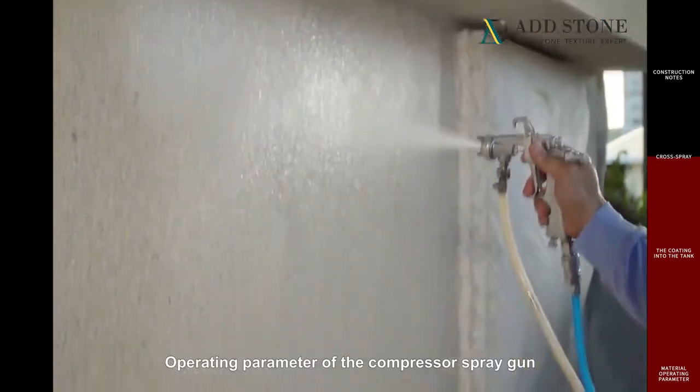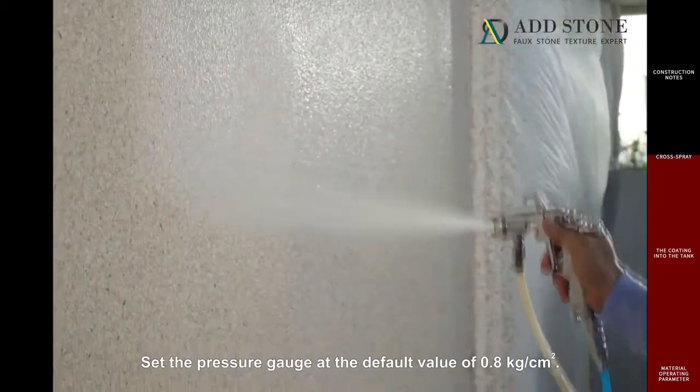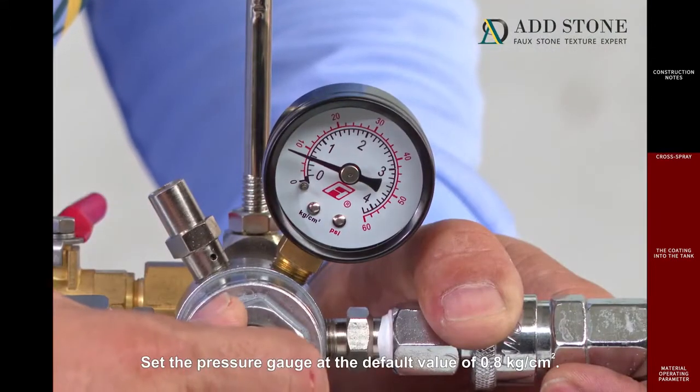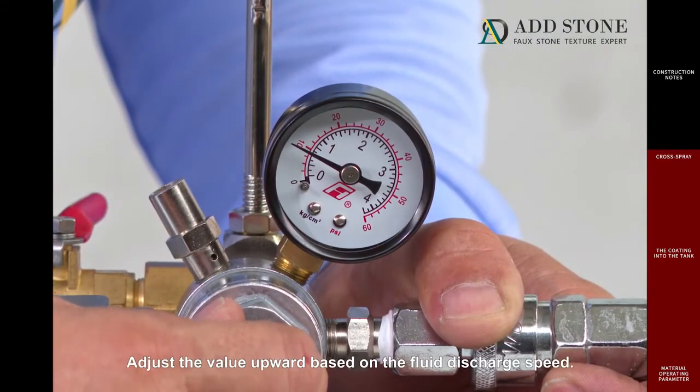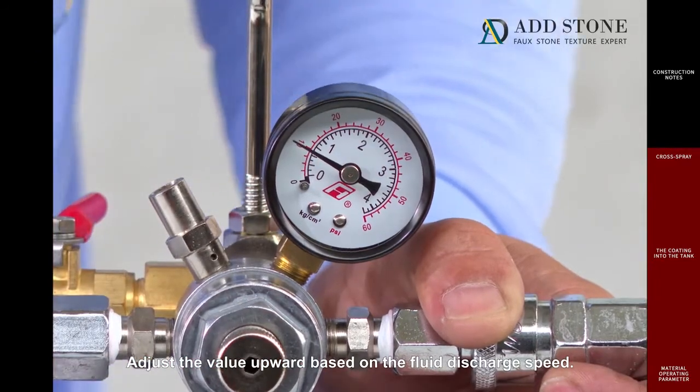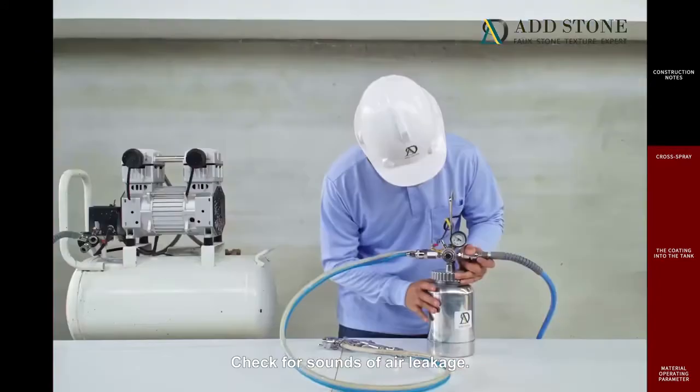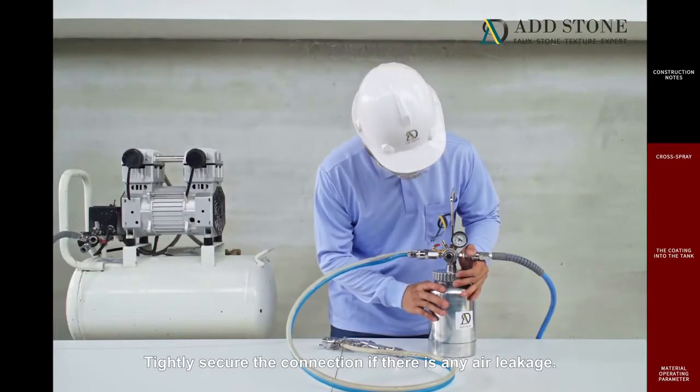Operating parameter of the compressor spray gun. Set the pressure gauge at the default value of 0.8 kilograms per centimeter squared. Adjust the value upward based on the fluid discharge speed. Check for sounds of air leakage. Tightly secure the connection if there is any air leakage.